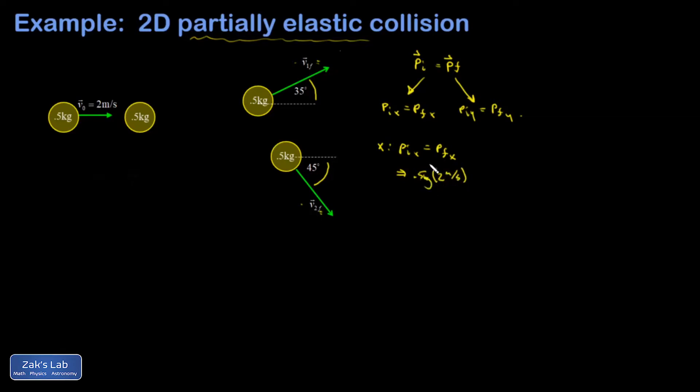I guess I'll keep units for a little while. In my final state, I have two masses moving. So I have this top one and the bottom one. I'll do the top first. And I have the mass times the x component of the velocity. That's going to be V1 final cosine 35. And then I have a 0.5 kilograms V2 final cosine 45 for the lower mass.